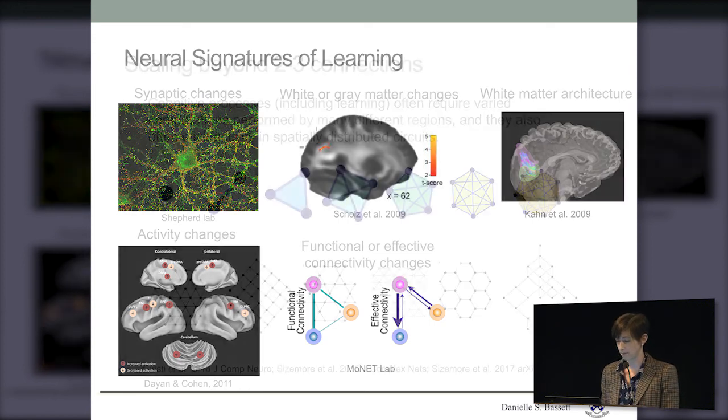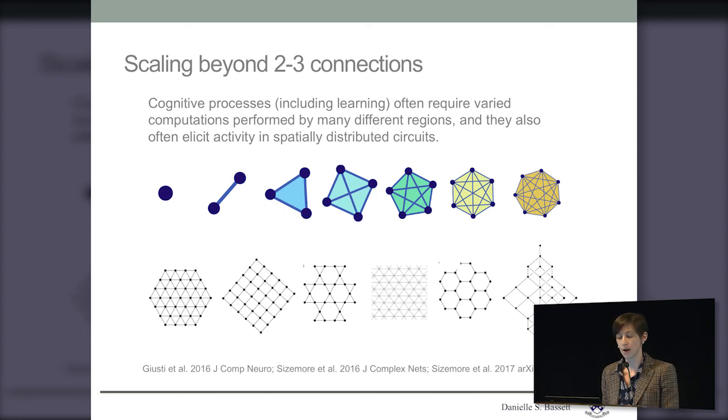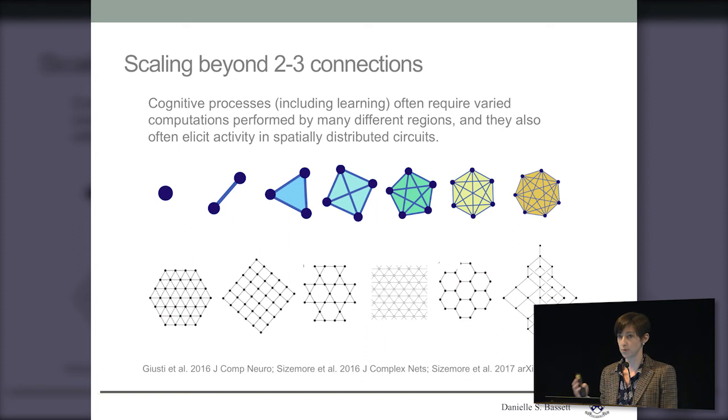What I like to do is to think about learning from a network perspective, scaling beyond just two or three connections and really thinking about whole patterns of connectivity in the human brain. The reason I like to do that is that cognitive processes — including learning but not just learning — often require varied computations performed by many different regions. They also often elicit activity in spatially distributed circuits, and if activity is being elicited in spatially distributed circuits, there must be an underlying network architecture facilitating that spatially distributed effect.